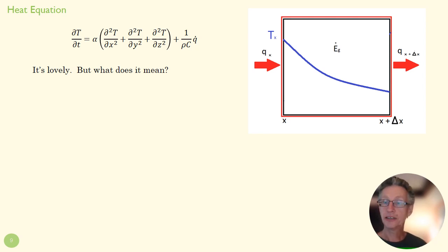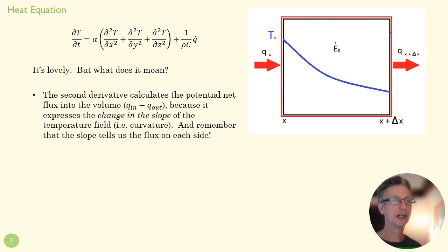All right, let's talk a little bit before we close here about what this means. Our beautiful little equation: the second derivative calculates the potential net flux into the volume because it expresses a change in slope of the temperature field. In other words, second derivatives express curvature. How much is this—if this is our temperature from here to here—how much is this slope changing here?